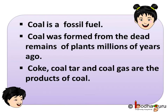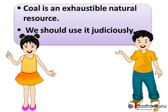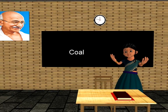So now you know how coal was formed and what the uses of coal are. To sum up: coal is a fossil fuel, formed from the dead remains of plants millions of years ago. Coke, coal tar, and coal gas are the products of coal. Coal is an exhaustible natural resource — there is only a limited supply, so we should use it judiciously. That was all for today. Bye-bye, children!